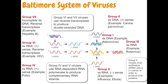Before discussing the experiment in detail: viruses are not living things, but we group them using the Baltimore system based on the genetic information they contain. Group one is double-stranded DNA, like adenovirus. Group two is single-stranded DNA, like canine parvovirus. Group three is double-stranded RNA, like rotavirus. Groups four and five are single-stranded RNA.